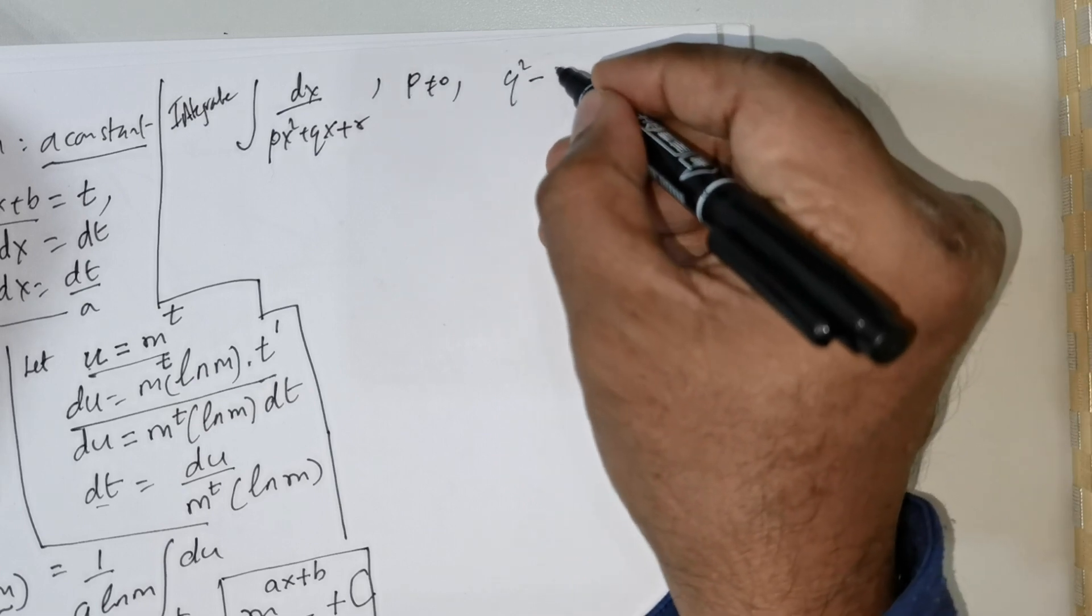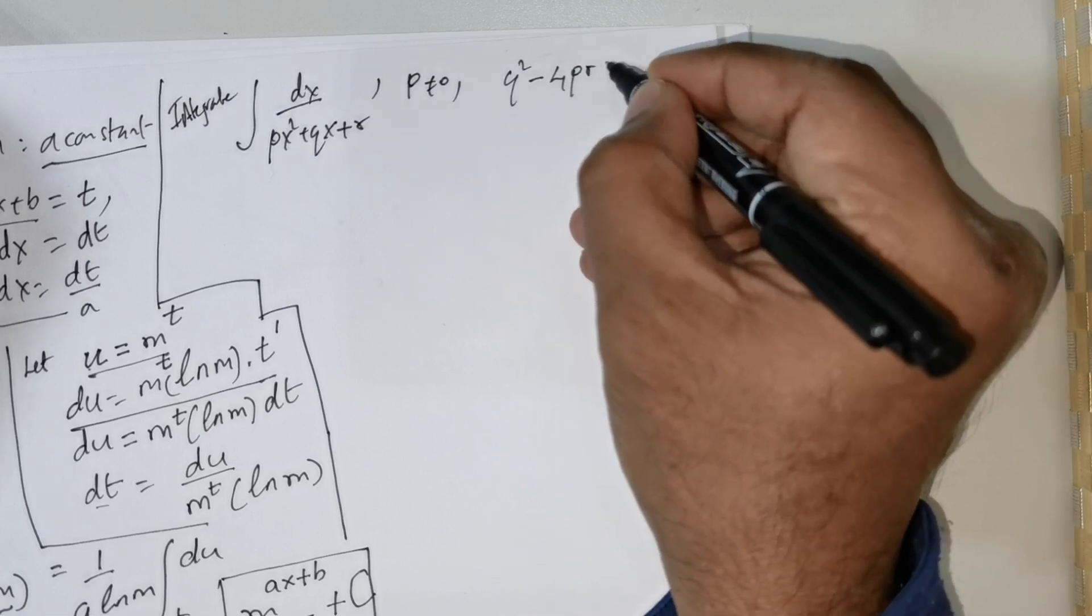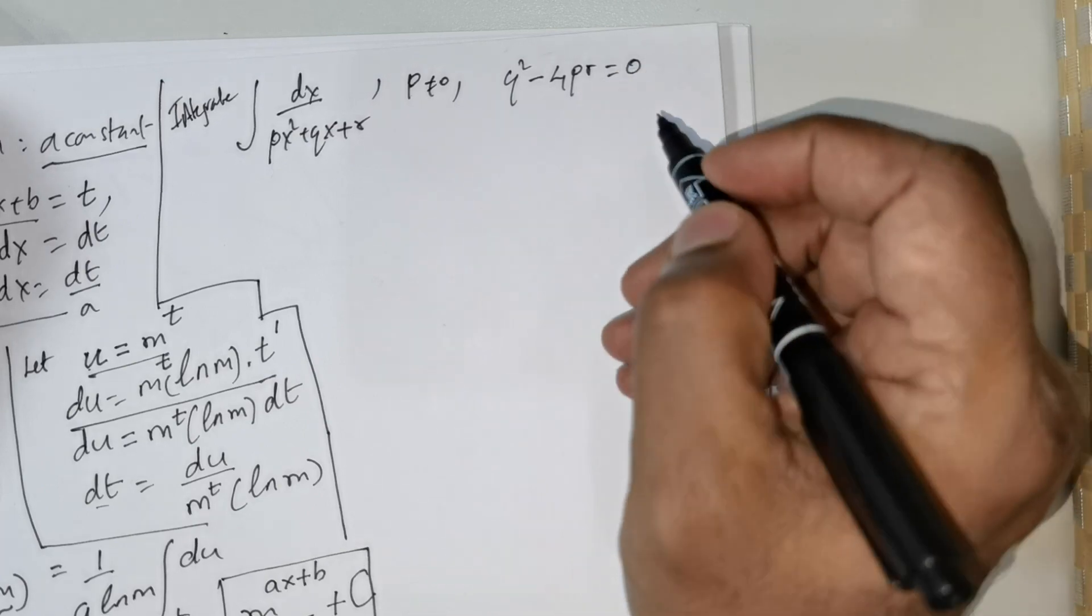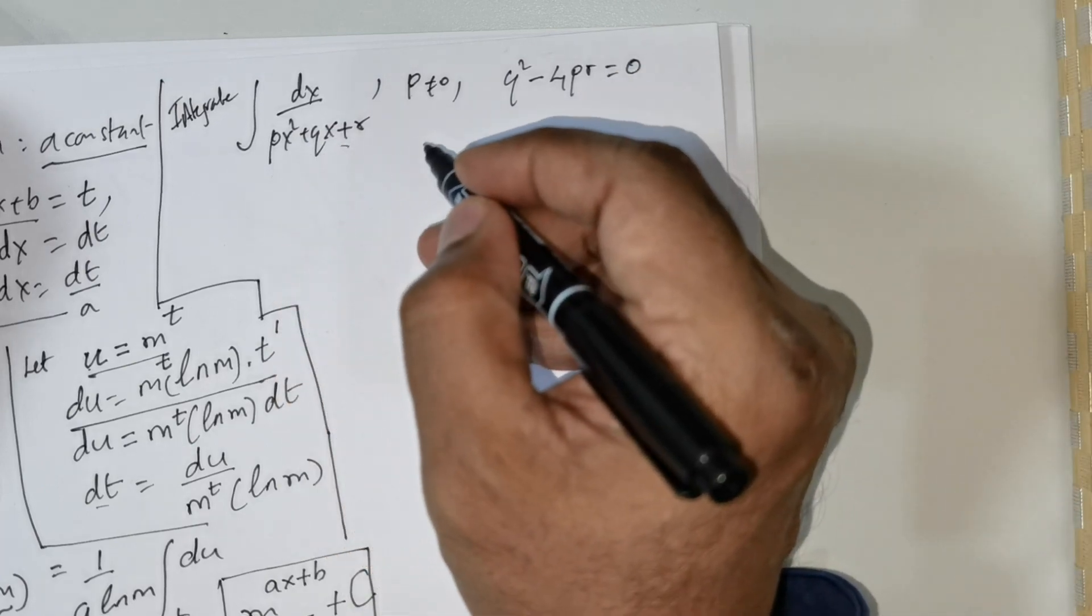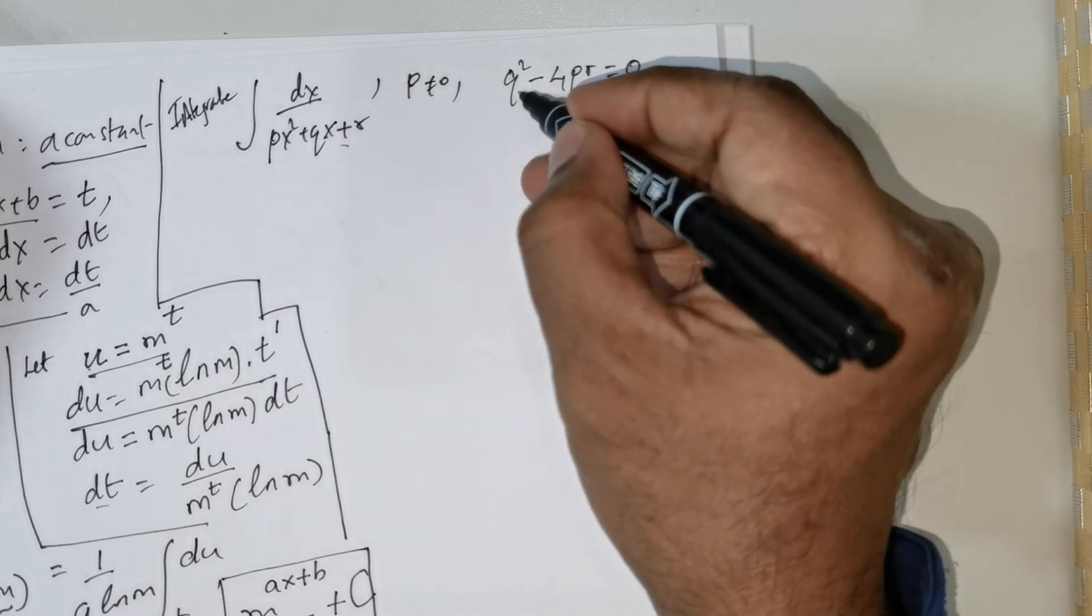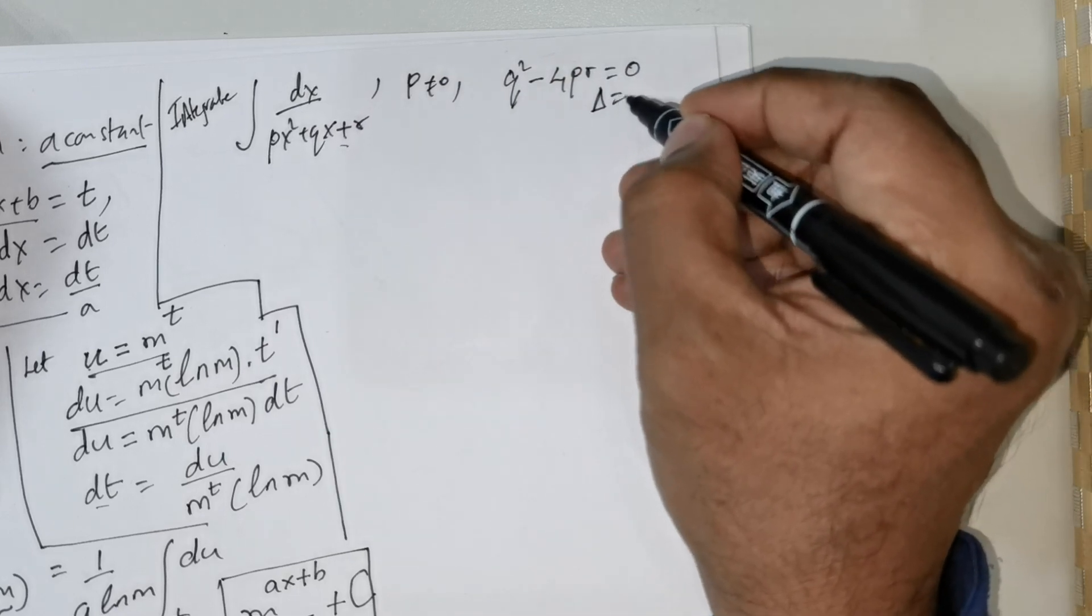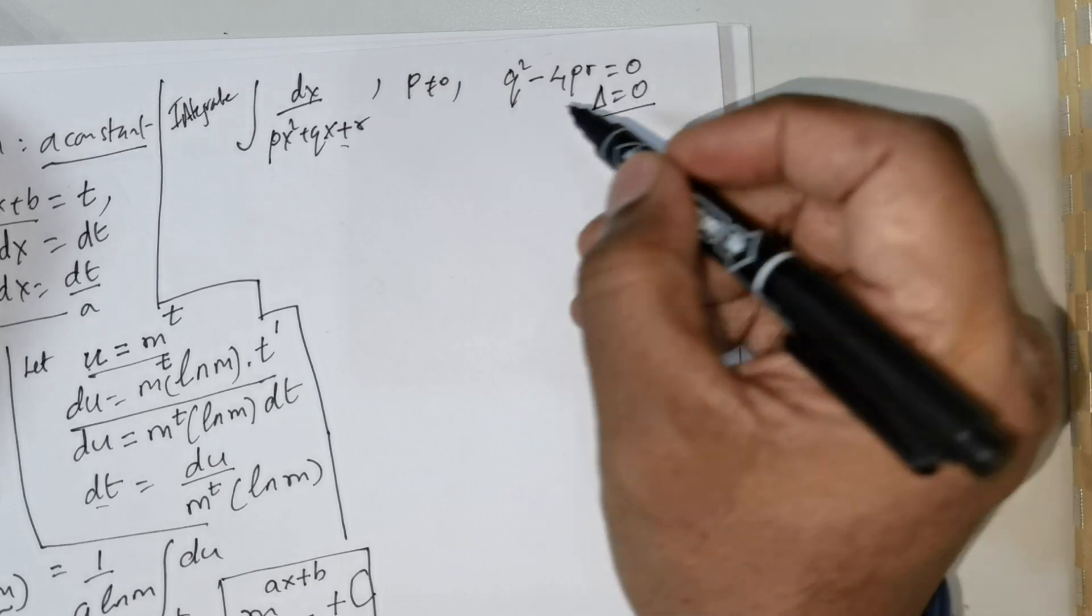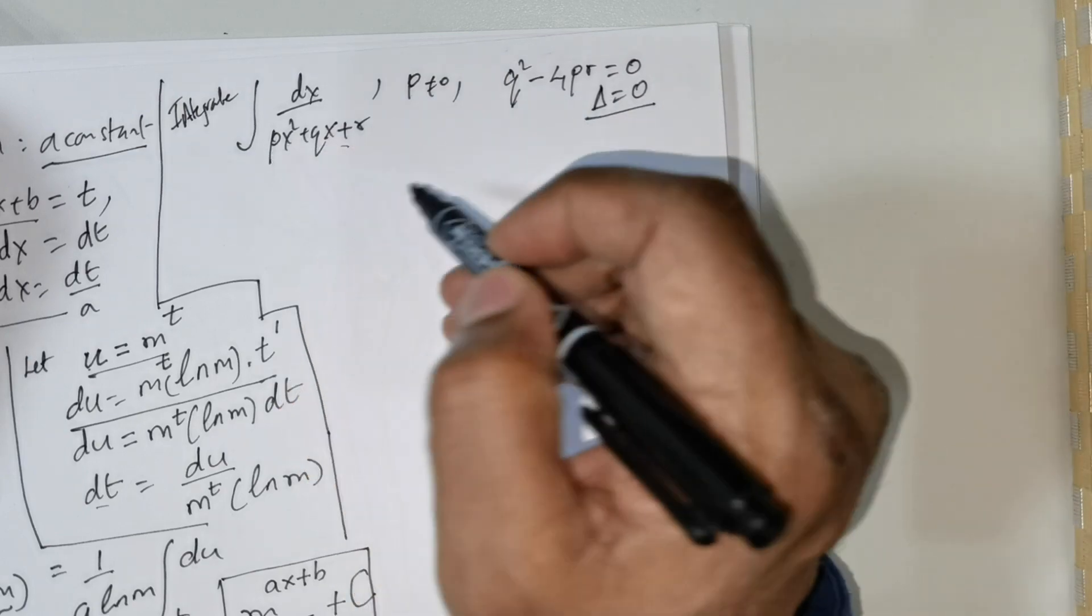And q squared minus 4pr is given to be equal to 0. This is a quadratic equation and this is nothing but the discriminant given to be equal to 0. The coefficient of x squared is not equal to 0.